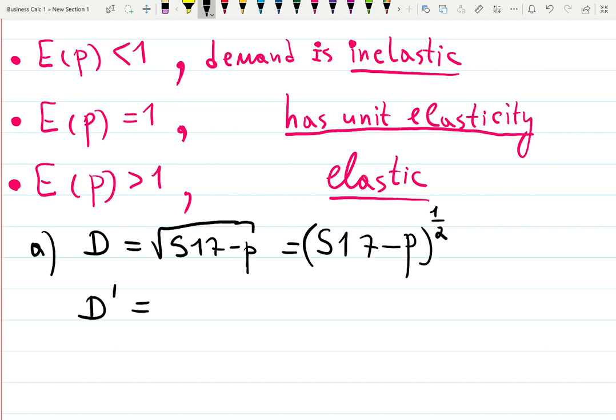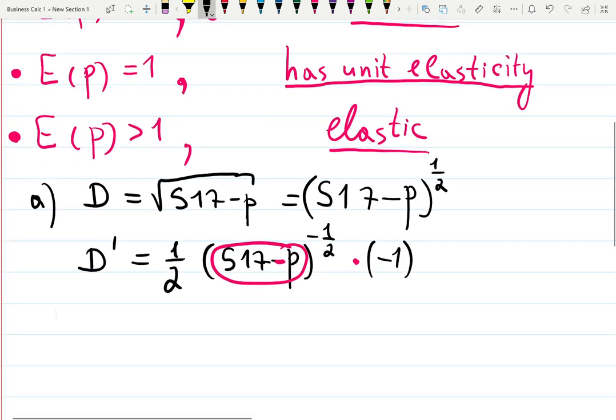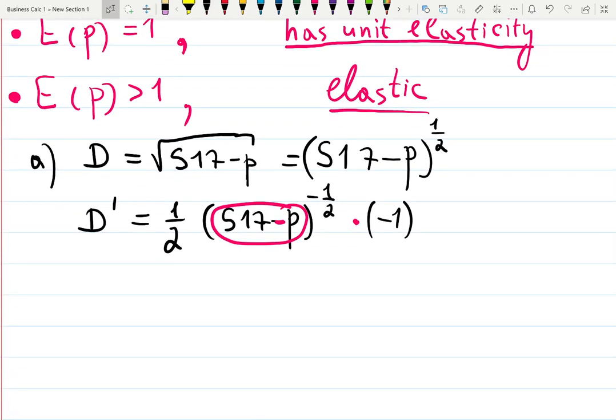Now you can use the power rule. The power rule says that 1/2 goes down, then we have (517 - p)^(-1/2), and don't forget times the derivative of the function inside. The derivative of 517 - p is negative 1. Don't forget this negative 1.